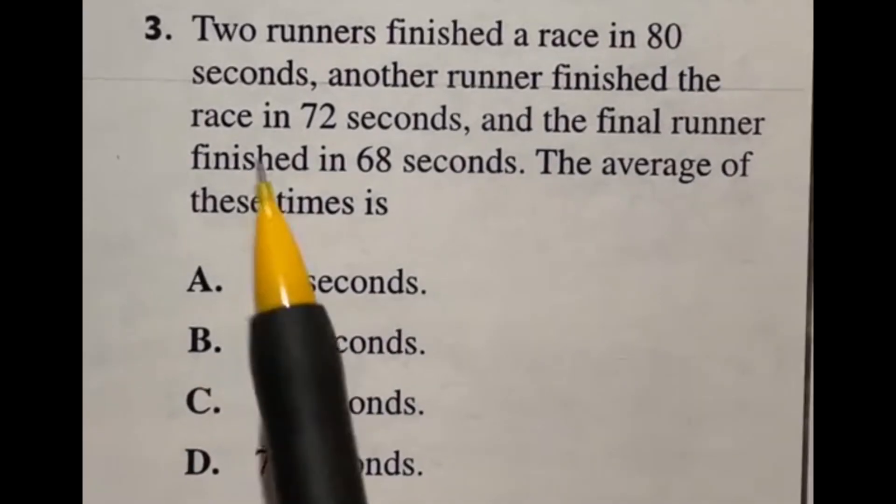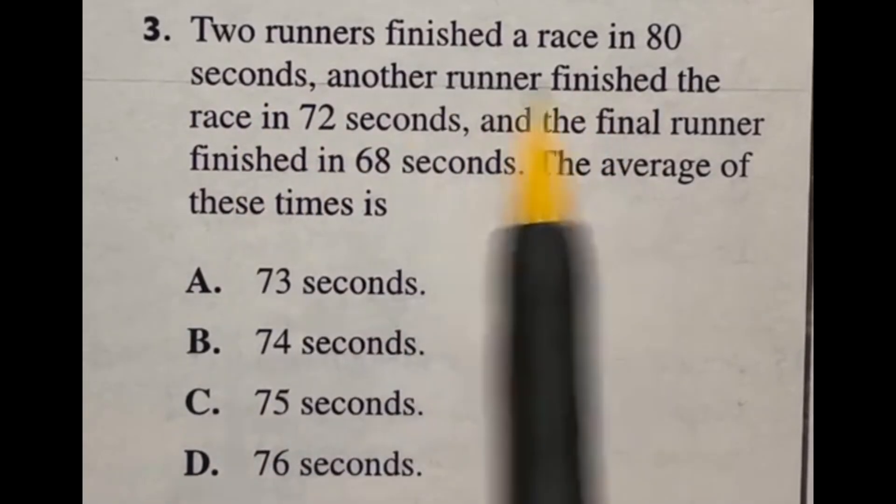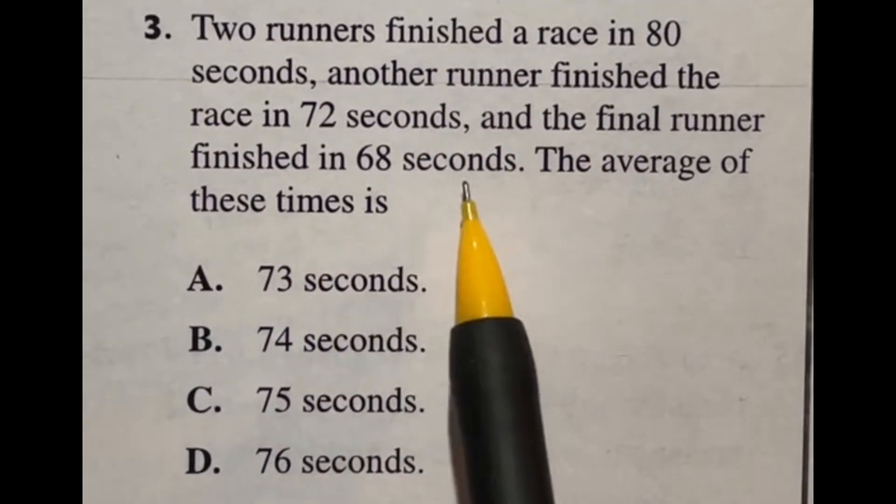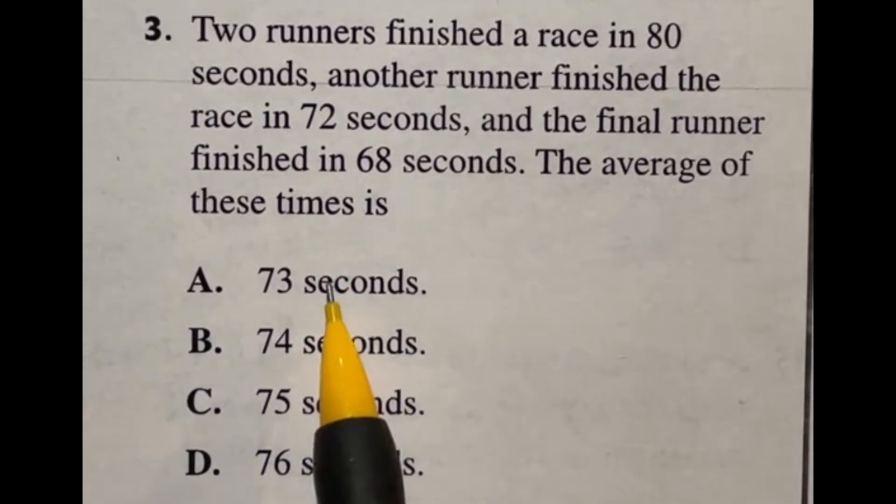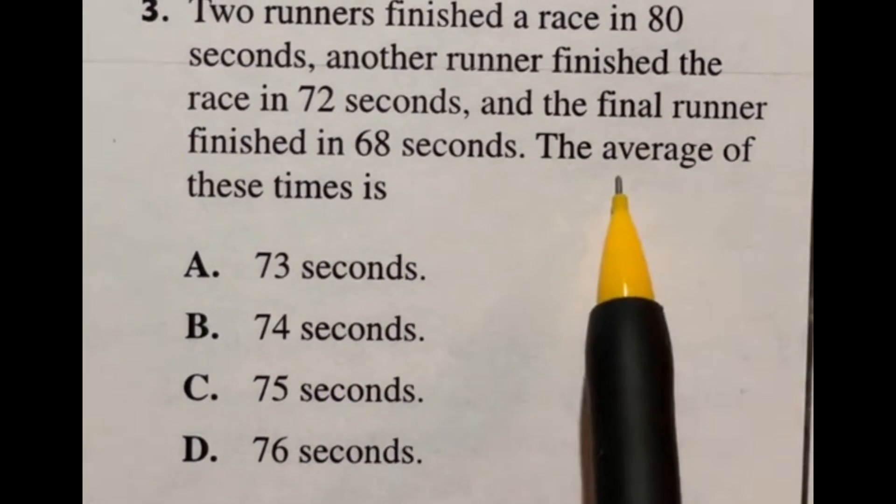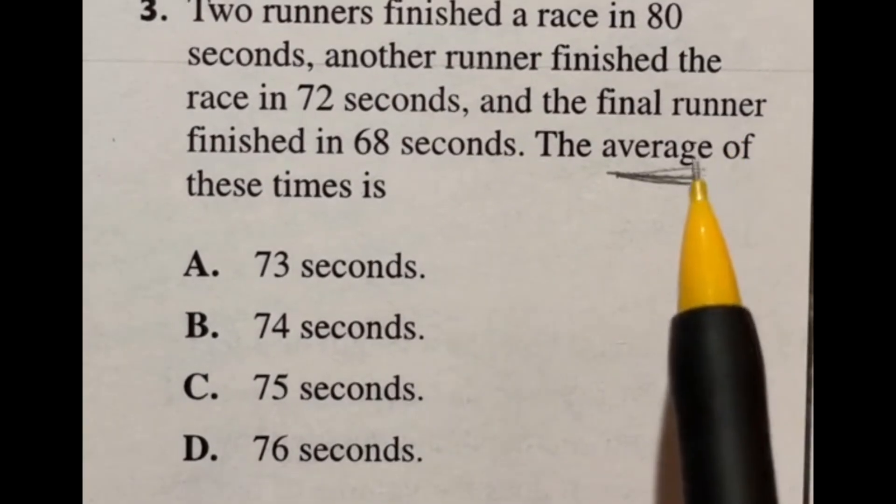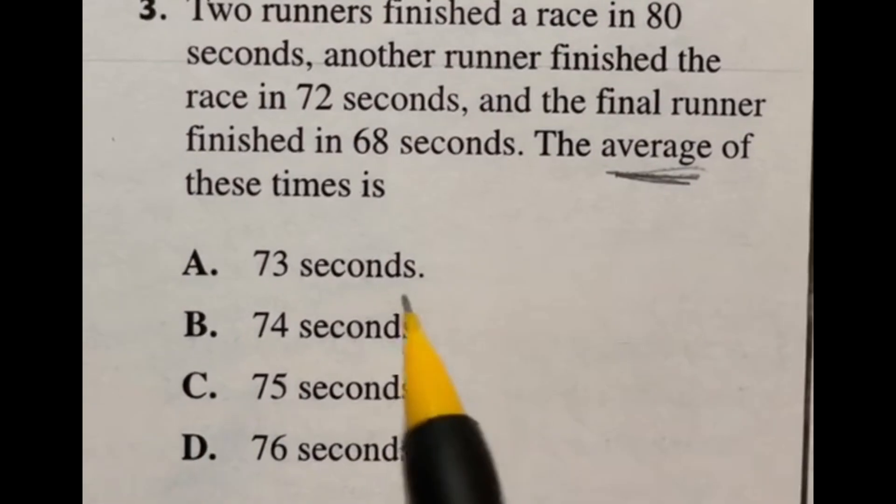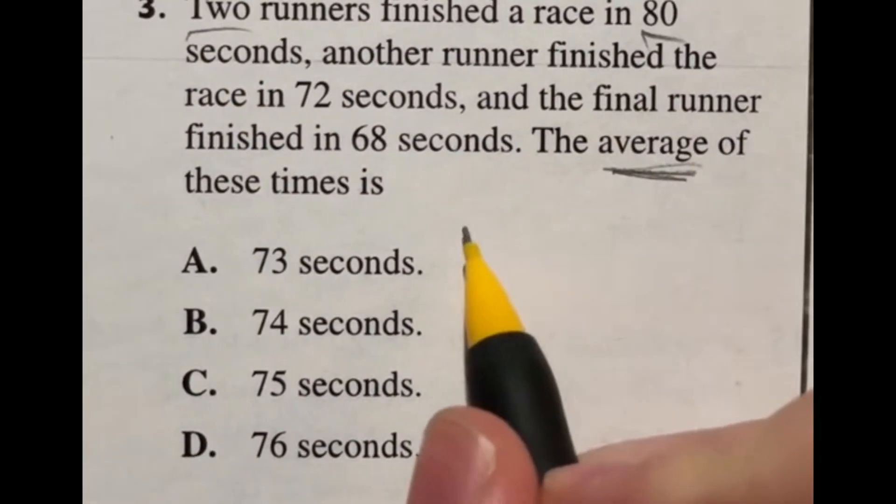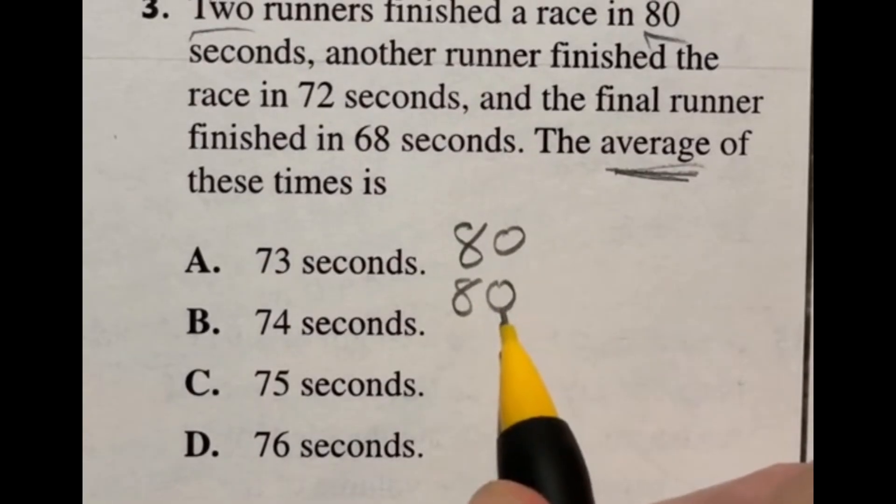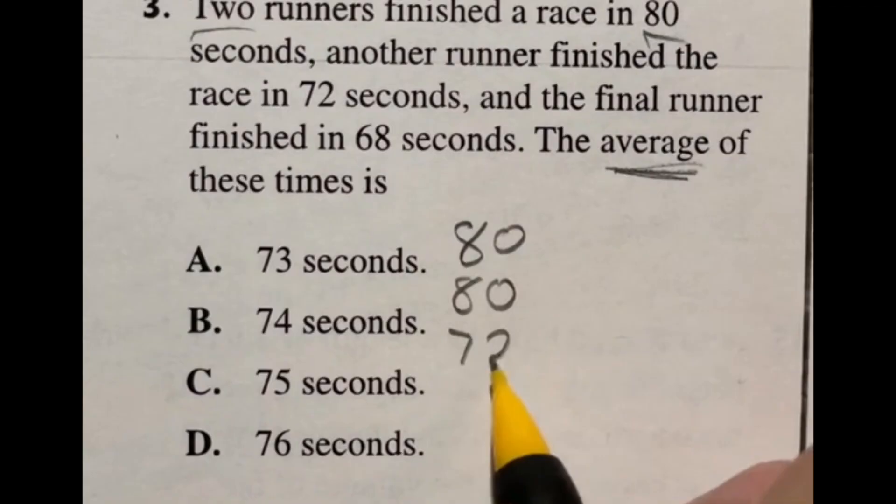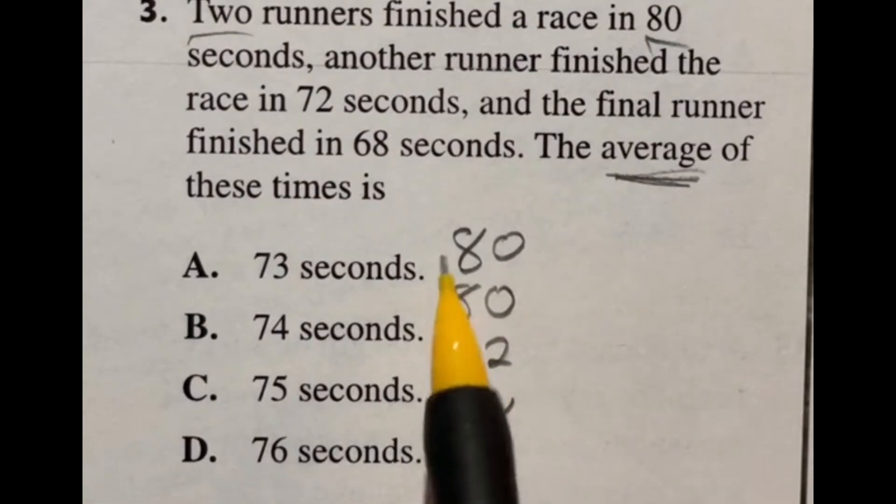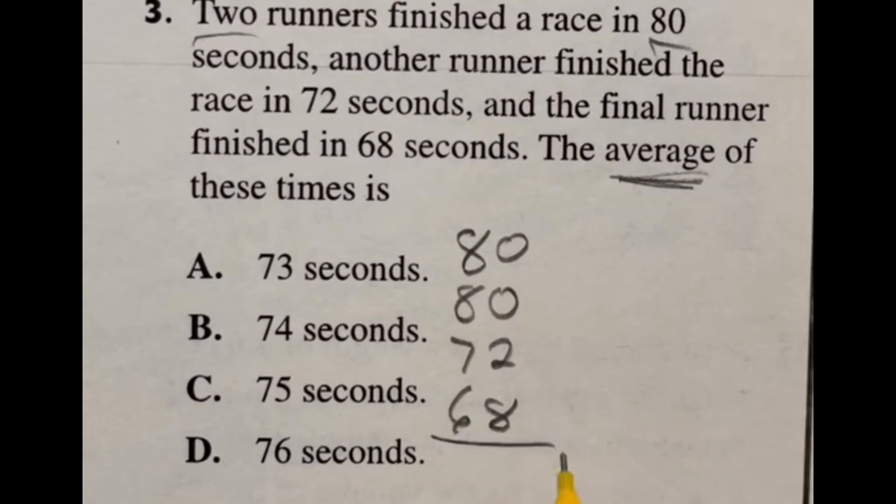Watch out, we got a runner. Just kidding. It's number three for the ASVAB. It says two runners finished the race in 80 seconds. Another runner finished the race in 72 seconds. And the final runner finished in 68 seconds. The average of these times is what? So the key here is just noting how do you find the average. The average is usually found by adding all of the numbers in your data set and then dividing by however many numbers that is. The key here is that two of them are hitting 80.